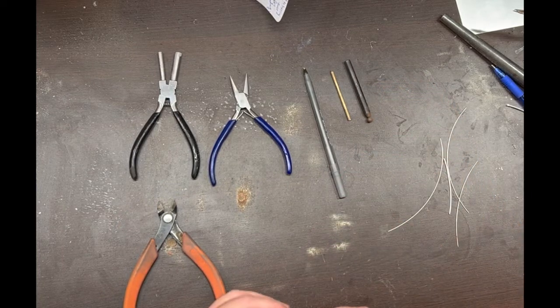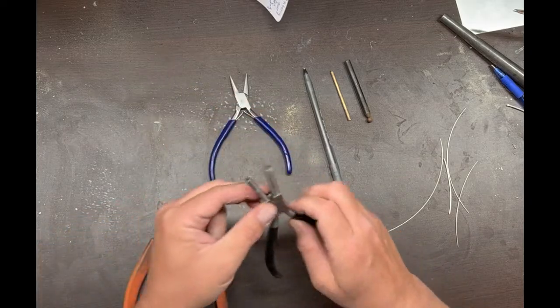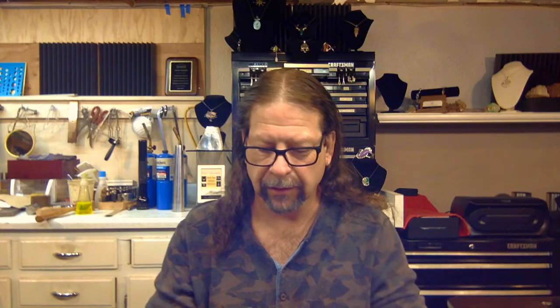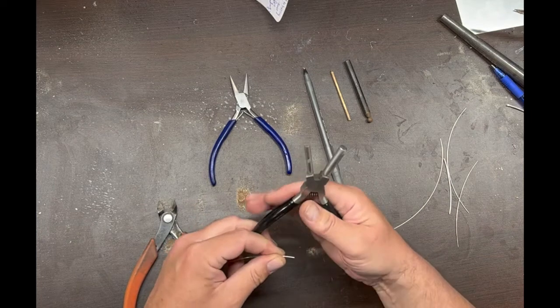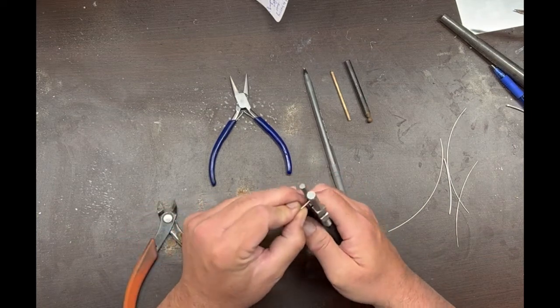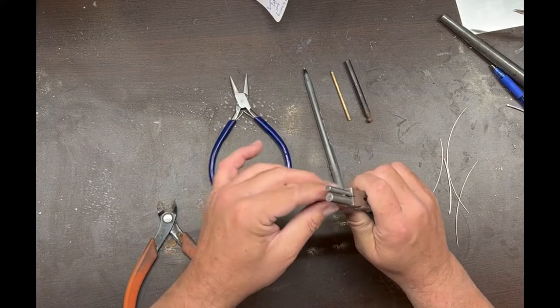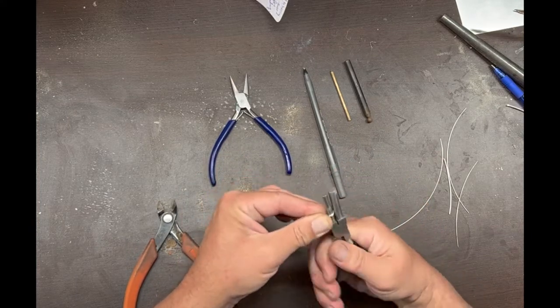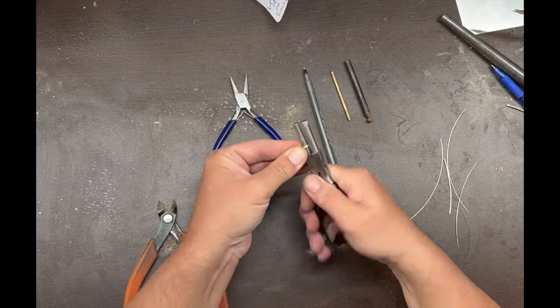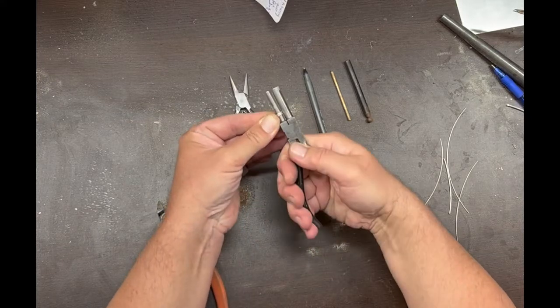So to start with, let's talk about using the bail making pliers. These come in all different sizes. The easiest way to do it is just take your piece of wire and just basically do it like this and keep spinning it up as you go.